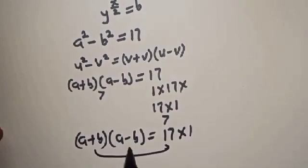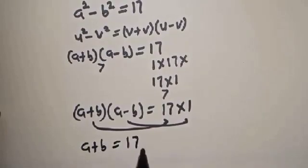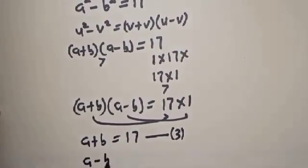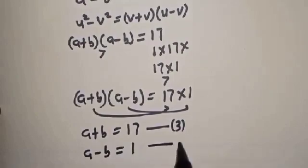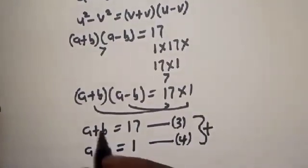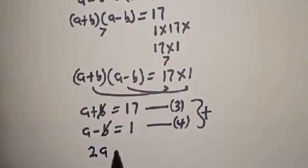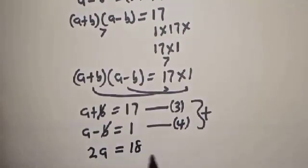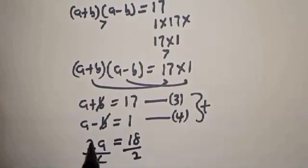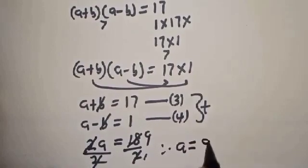Therefore, A plus B multiplied by A minus B equals 17 times 1. We have A plus B equals 17 — equation 3 — and A minus B equals 1 — equation 4. Adding the two equations together, the B terms cancel, giving 2A equals 17 plus 1, which is 18. Dividing both sides by 2, A is equal to 9.